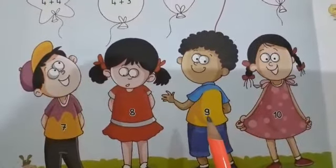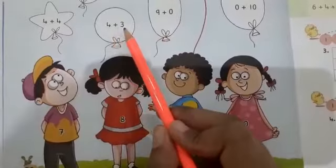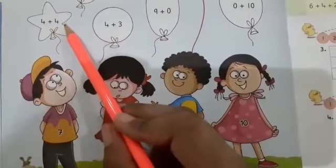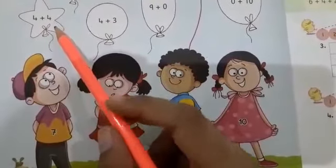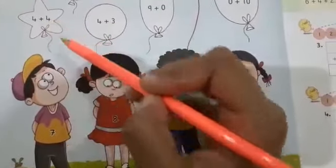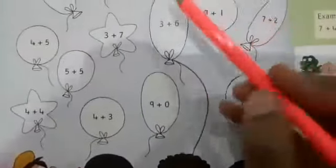What do you have to do? Inside these balloons, numbers are written, like four plus three, four plus four. You have to add them. After adding, whatever your answer will come, you will match it with that number.